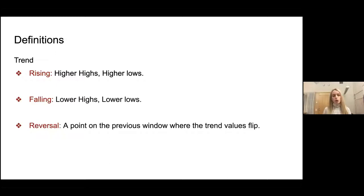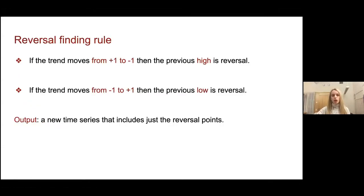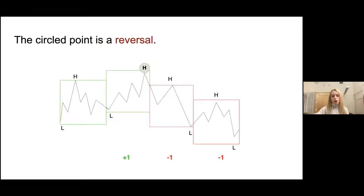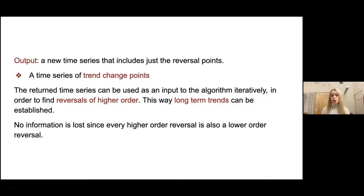We now come to the definition of a reversal, which is a point on the previous window where the trend flips — meaning we go from a rising trend to a falling trend or the other way around. If the trend moves from plus one to minus one, the previous high is the reversal; for the reverse direction, the previous low is the reversal. The output of the algorithm is a new time series containing just these reversal points. For example, moving from the second to the third window, we move from a rising trend to a falling trend and the previous high — circled — is the reversal, giving us a time series of trend change points.